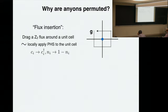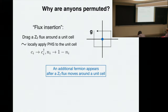Why are anyons permuted? We have to think about what happens if you take this symmetry flux that we insert into the system and move it around the unit cell. Moving the flux around the unit cell is equivalent to locally applying the particle-hole symmetry to the unit cell. Particle-hole symmetry takes c to c†, so if you look at how the fermion number transforms, it goes from N to 1 minus N — if you have no fermion, you get one fermion, and vice versa. The point is that the fermion parity changes in this process. This is something that has to be accomplished by the topological order. If you move a flux around the unit cell, you should somehow pump out a fermion, to compensate this process.